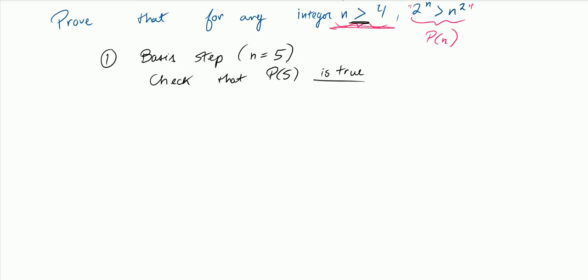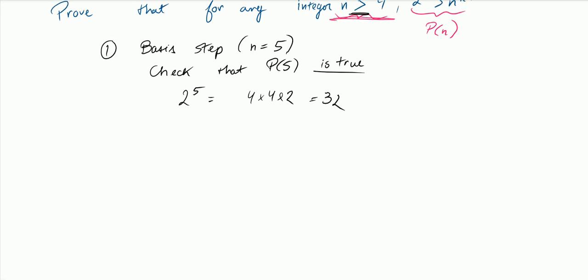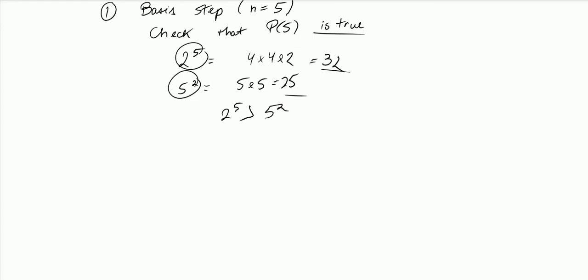This isn't that complicated. I just look at both expressions. 2 to the 5 is 4 times 4 times 2 — that's 16, so that's 32. And 5 squared is 5 times 5, which is 25. Clearly 2 to the 5, which is 32, is greater than 5 squared, which is 25. So 2 to the 5 is greater than 5 squared, and this proves that P(5) is true.